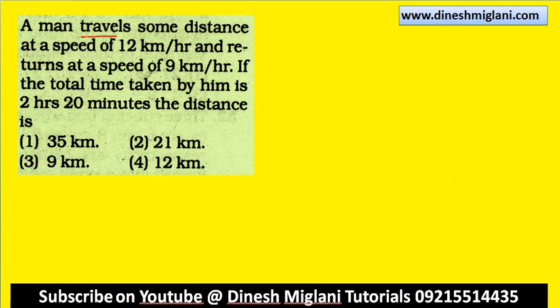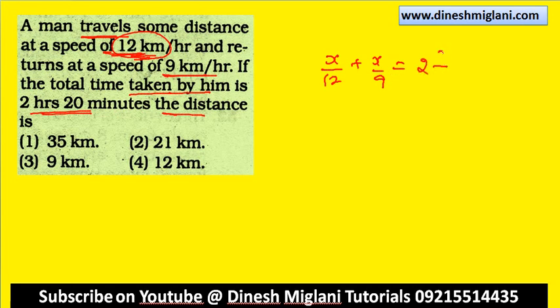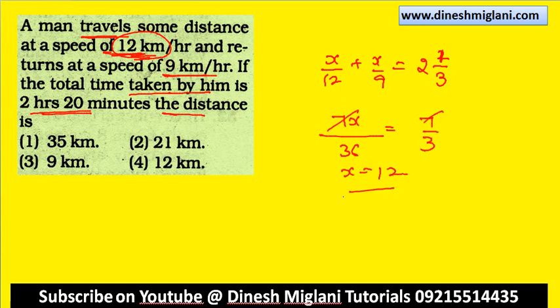A man travels some distance at 12 km per hour and returns at 9 km per hour. Total time taken is 2 hours and 20 minutes. We have to find the distance. X by 12 plus X by 9 = 220 by 60 = 7 by 3. LCM is 36: 3X + 4X = 7X = 7 by 3. X = 12. The distance the man is travelling is 12 km — that becomes your answer.